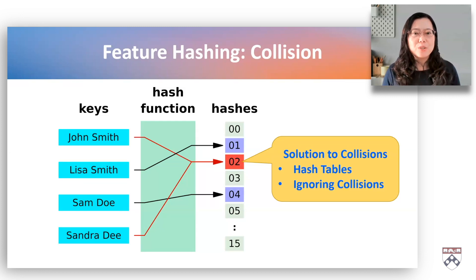The hashed feature is often sparse, with most elements being zeros. This is because each category contributes to only a few dimensions in a fixed dimensional space.